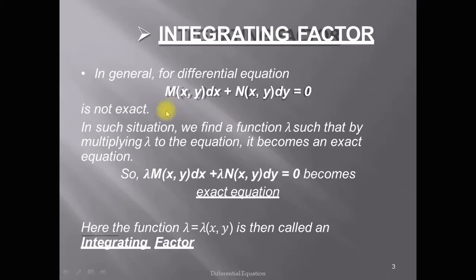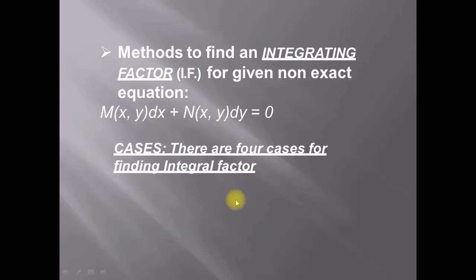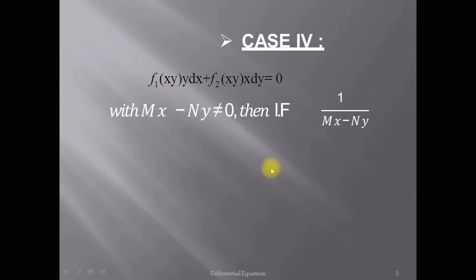If this equation is not exact, we find a function lambda such that by multiplying lambda to the equation, it becomes an exact differential equation. Multiplying lambda to the given differential equation, we obtain lambda·M dx + lambda·N dy = 0, and now the equation becomes exact. The function lambda, which is a function of x and y, is called an integrating factor. There are four cases for finding an integrating factor, and today we discuss Case 4.